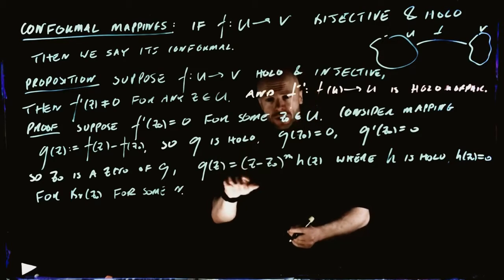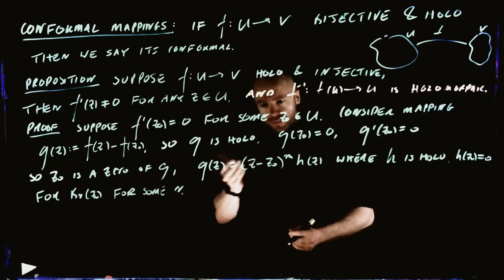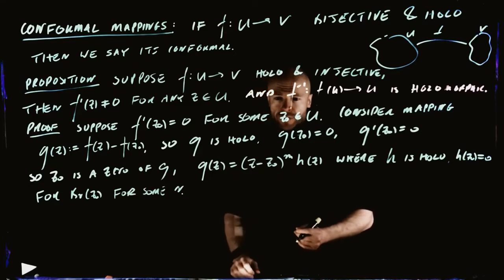On a very small scale, when z is very close to Z0, H(z) is very much just like the constant H(Z0). So it's somewhat like a polynomial, like (z minus Z0) to the N.